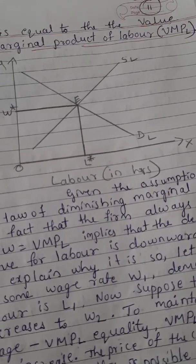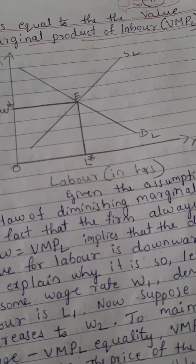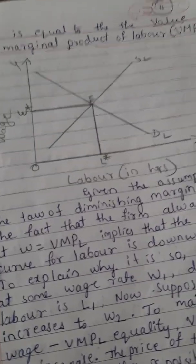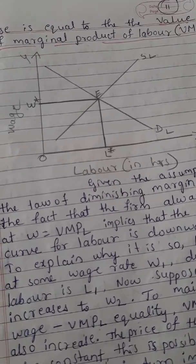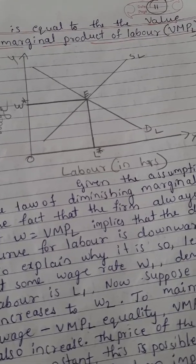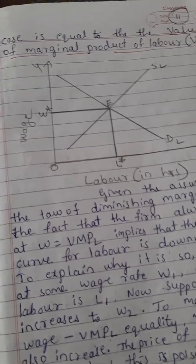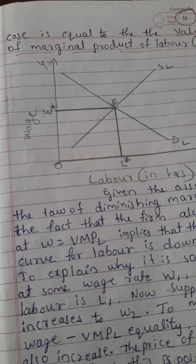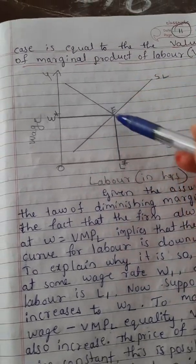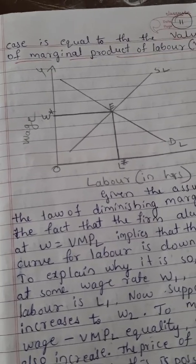At a higher wage rate, the household sector may be willing to supply less labor individually, but overall more individuals are attracted to the labor market. Aggregating individual supply at different wage rates, the supply curve of labor is upward sloping. This is because at higher wages, more individuals are willing to work. The demand curve for labor is downward sloping.